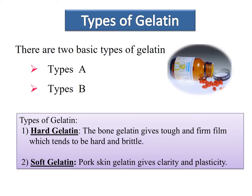Now let us see the different types of gelatin. Gelatin is of two types: Type A and Type B. Capsules are also of two types, and different types of gelatin are used to formulate each. For hard gelatin capsules, bone is the source. Bone gelatin gives a firm film which tends to be hard and brittle.